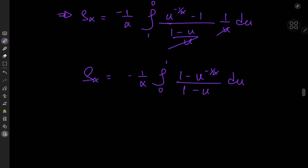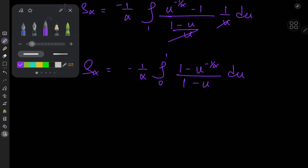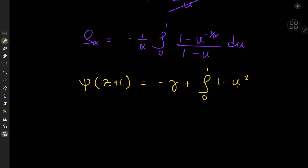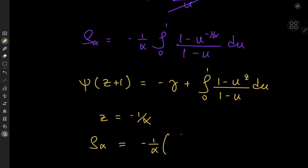Now this is a very nice integral whose result we can express in terms of the digamma function. The integral representation of the digamma function is: ψ(z+1) = −γ + integral from 0 to 1 of (1 − u^z)/(1 − u) du, where γ is the Euler–Mascheroni constant. So we need z = −1/α, and we can express the result of our infinite series as S_α = −1/α times (γ + ψ(1 − 1/α)).